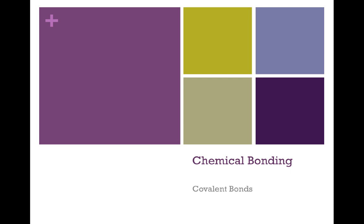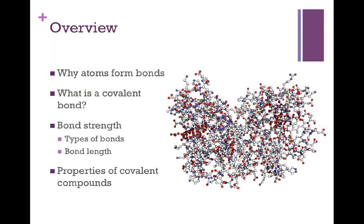In this video we'll be going over the basic concepts that go along with covalent bonding, when atoms share electrons to link together forming compounds. We'll begin with a brief overview of some of the material we'll be covering. We'll first talk about why atoms form bonds in the first place. This discussion is exactly the same when talking about ionic or covalent bonding, but it's important to establish that basis for why bonding occurs.